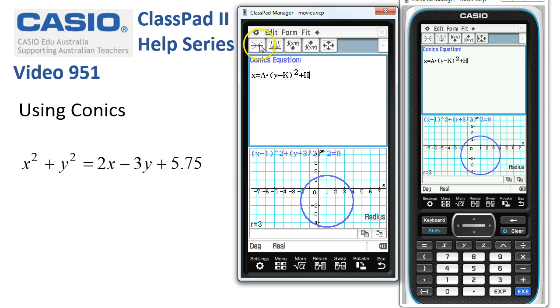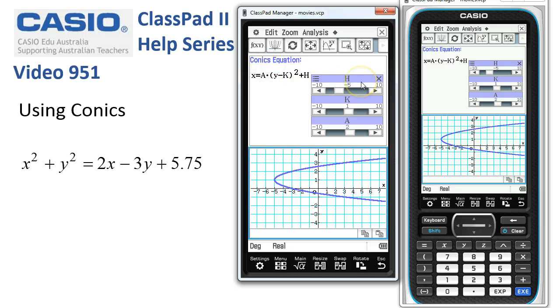Now what I'm going to do is, instead of tapping the left hand button, the second button in here will pop up a slider where we can explore what effect the coefficients a, k, and h have.